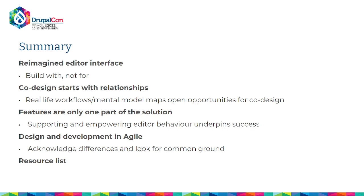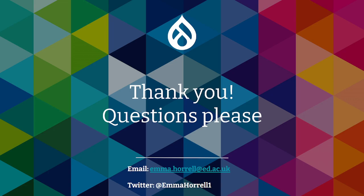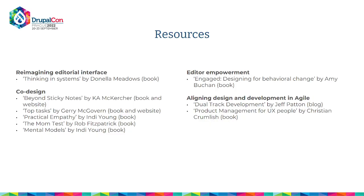Quick summary: I've given you a vision of a reimagined editorial interface and talked through co-design. The crucial part is starting with relationships — mapping out and listening to editors. Features are only one part of the solution; empowering editors is equally important, as is learning from the wider community. I've given some ideas about aligning design and development in agile, and that's all I have.